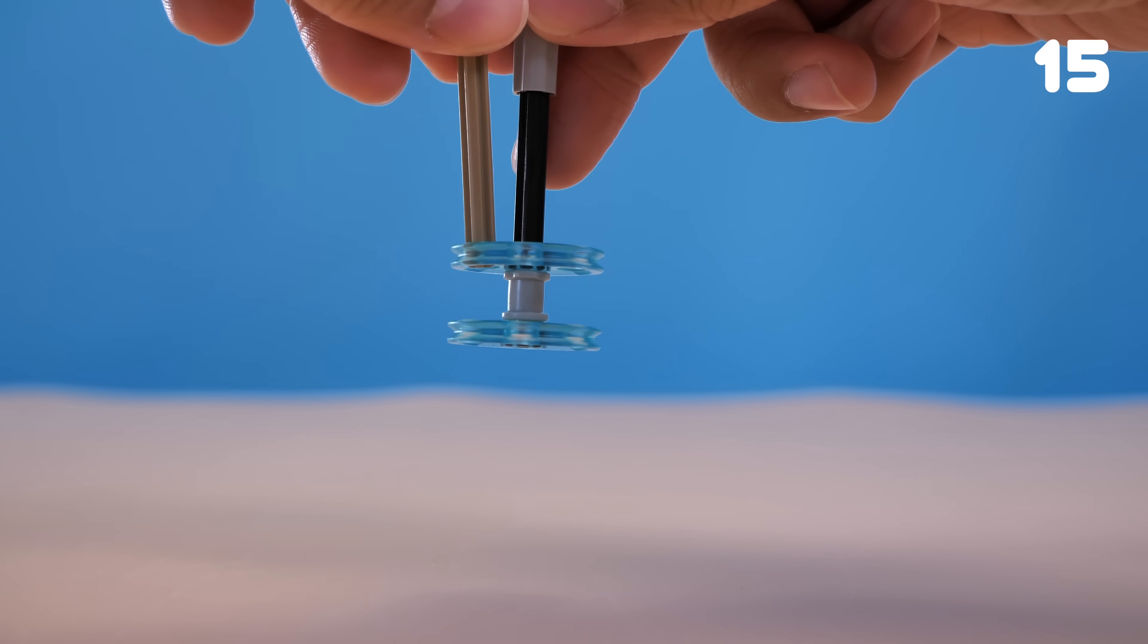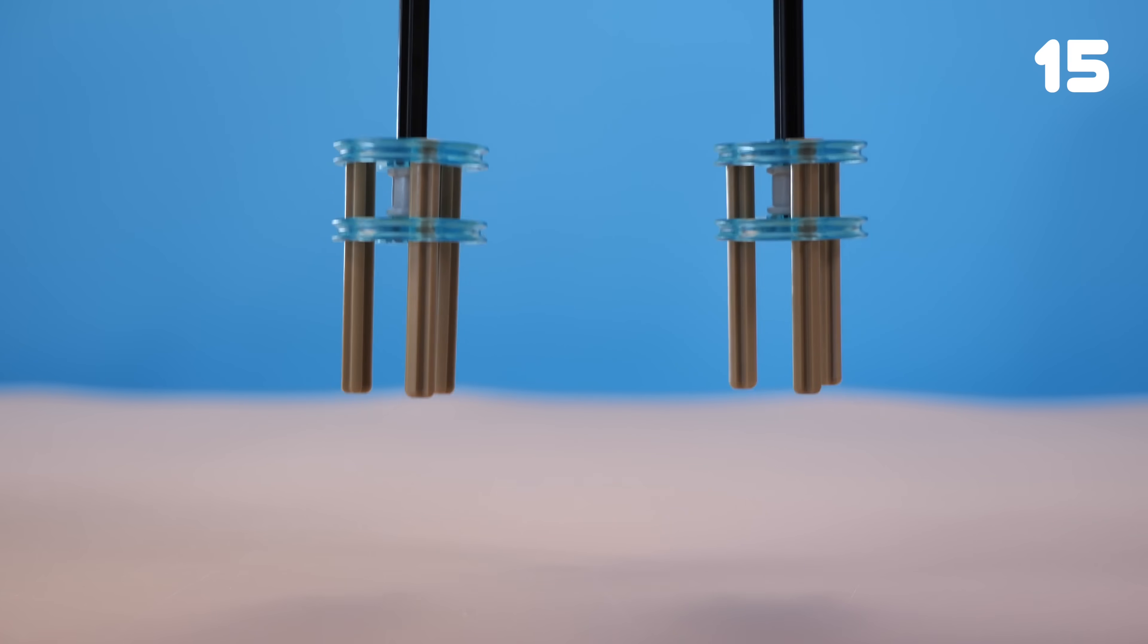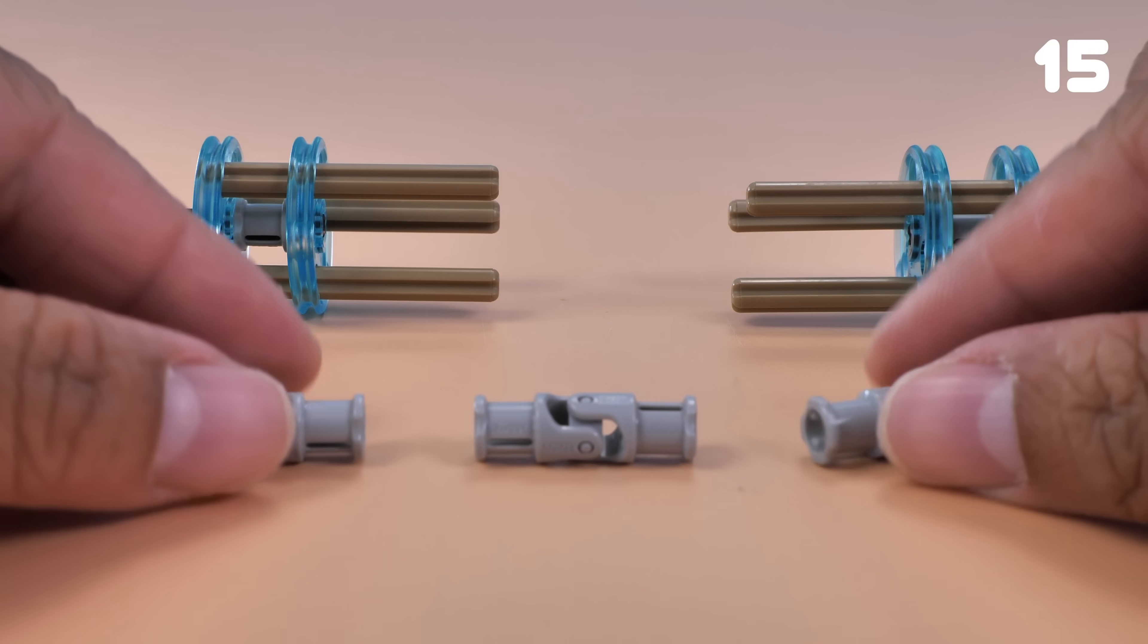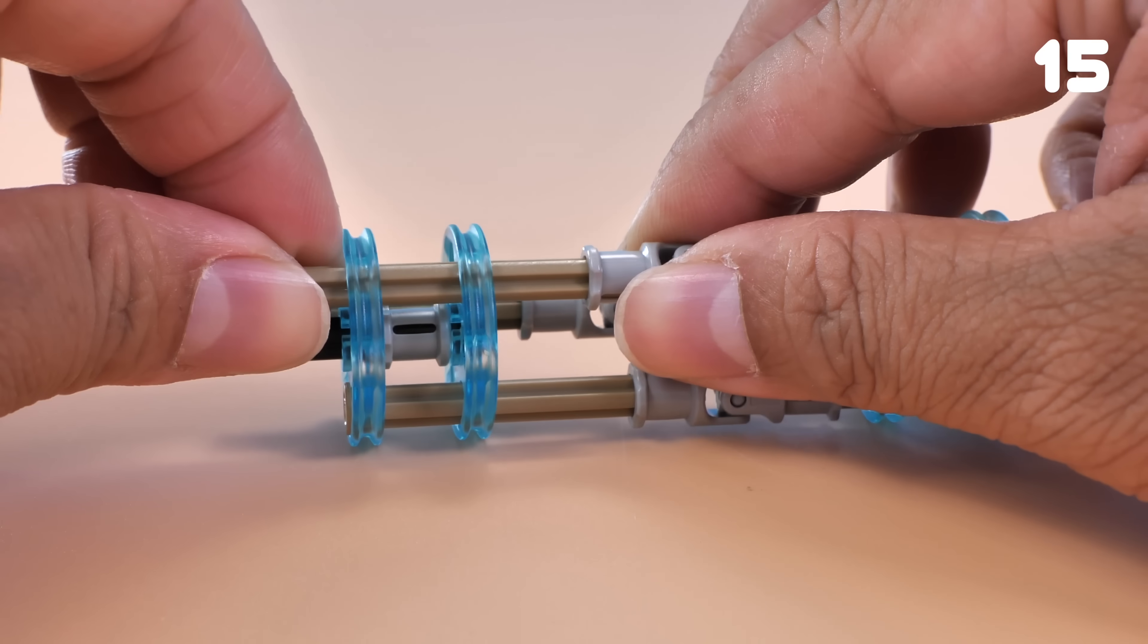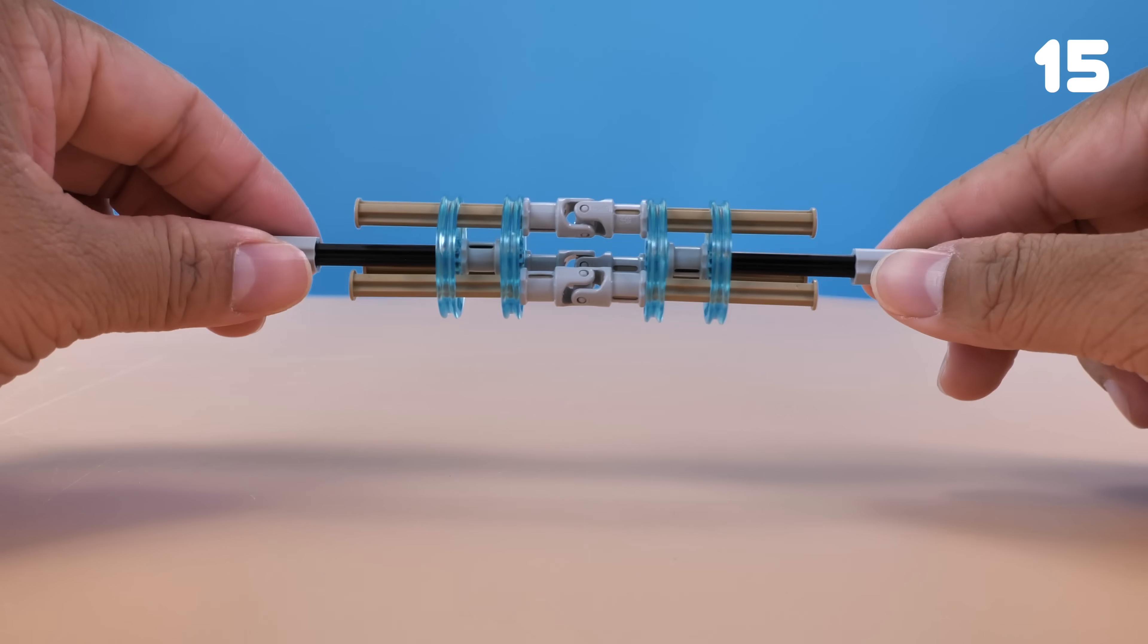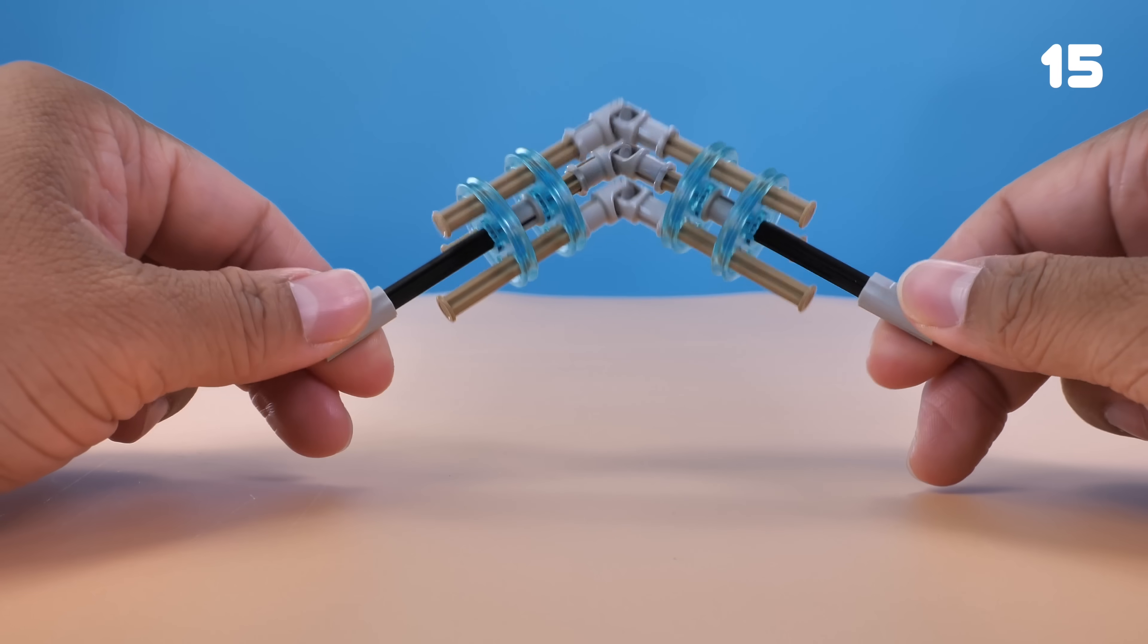For this fidget, I'm pretending to reload a revolver. No, actually I'm building a large-scale universal joint. Connecting three axles with standard-sized universal joints, we can get a fully functional large universal joint.